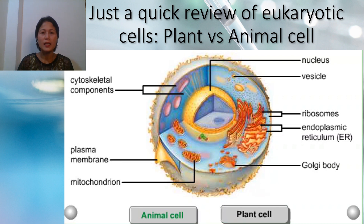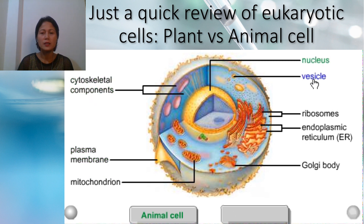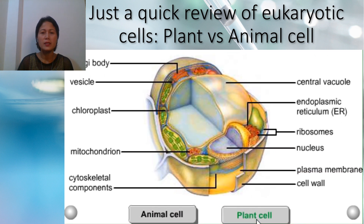A typical animal cell has the following organelles: the mitochondrion, plasma membrane, cytoskeletal components, nucleus, vesicle, the ribosomes, endoplasmic reticulum, and Golgi body. Plant cells do have similar organelles to animal cells, except that plant cells possess chloroplasts, the bigger central vacuole, and the cell wall.